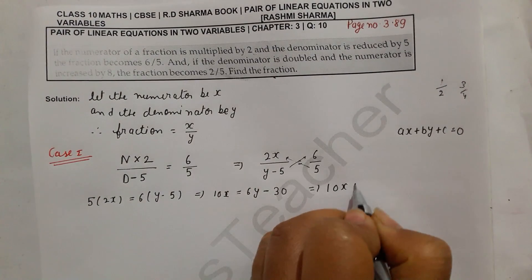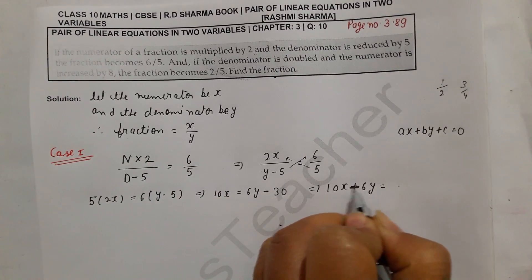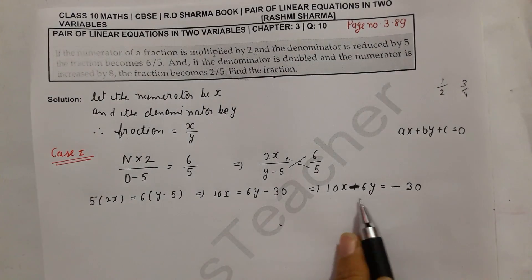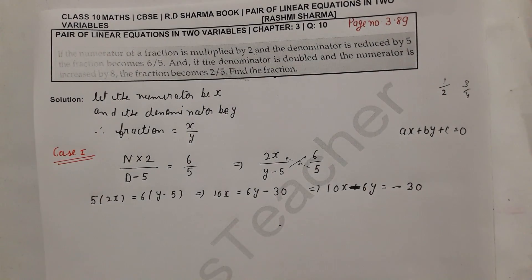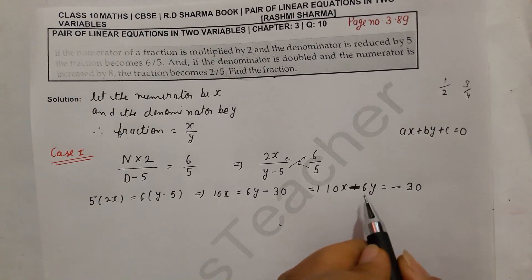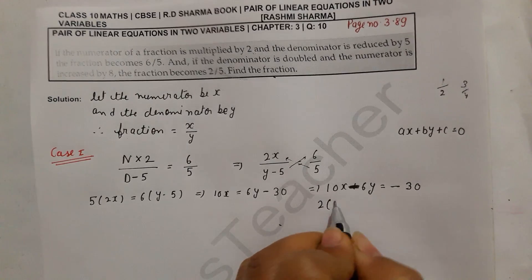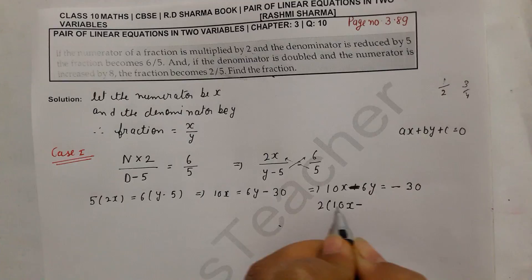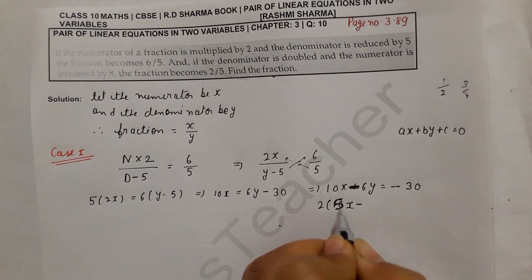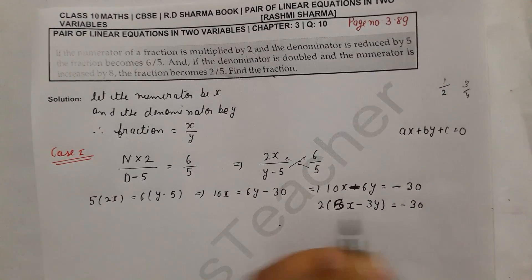We take all terms to one side: 10x minus 6y equals minus 30. We take 2 as common to simplify: dividing through by 2 gives us 5x minus 3y equals minus 15.